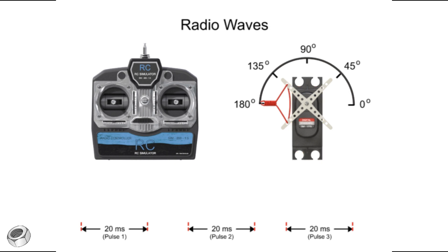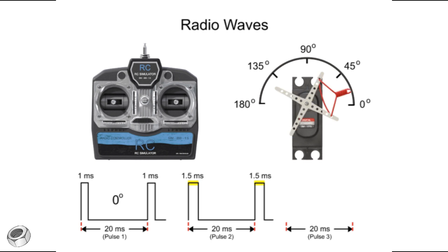For example, if the pulse is high for 1 millisecond, then the servo horn position can be programmed to be at 0 degrees. If it is 1.5 milliseconds, it is set to the center or 90 degree position. If the pulse signal is 2 milliseconds, then it can be instructed to go to the 180 degree position.